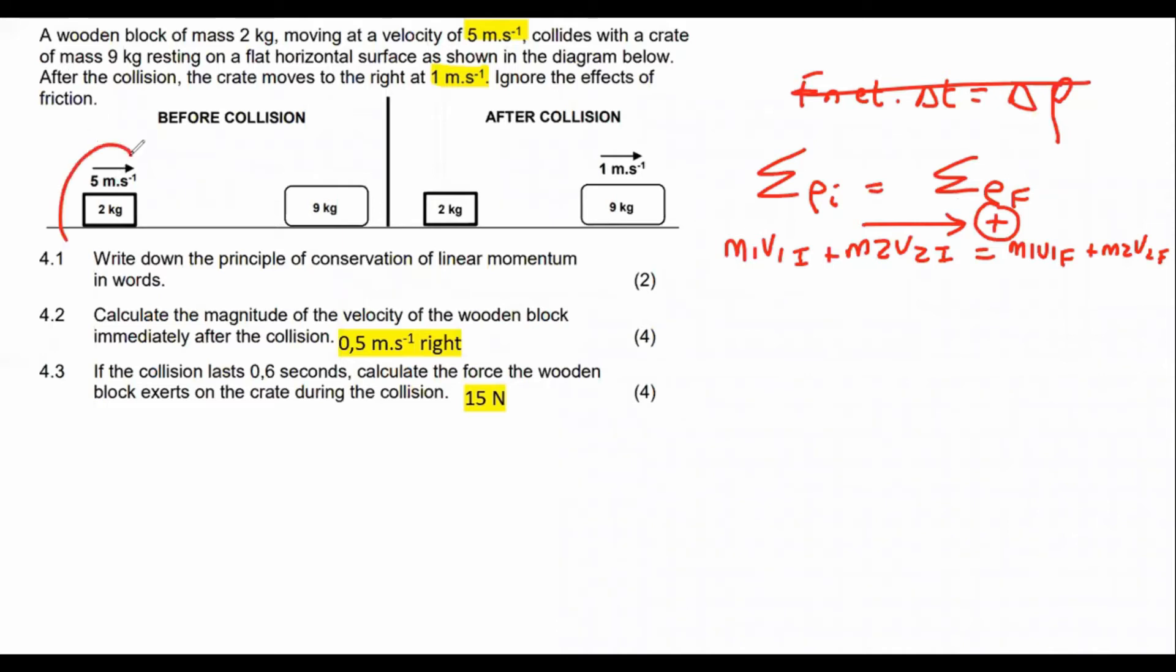So here we've got our first object. It had a mass of two and a velocity of five plus the second object has a mass of nine and a velocity of zero. That's what its initial velocity was, because they tell us that it was resting.